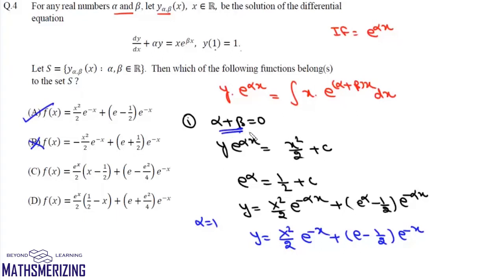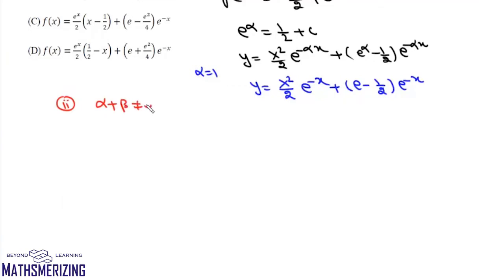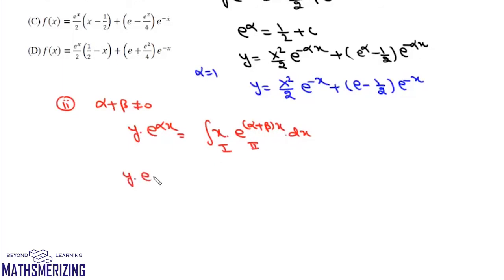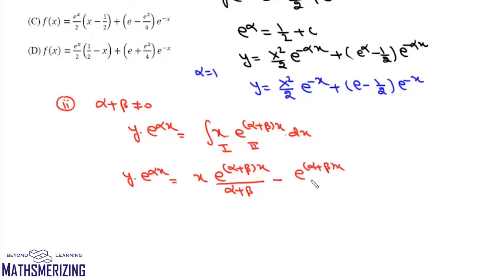Case 2: alpha + beta ≠ 0. We write y·e^(alpha·x) = integral of x·e^((alpha+beta)x) dx and solve by integration by parts, giving y·e^(alpha·x) = x·e^((alpha+beta)x)/(alpha+beta) - e^((alpha+beta)x)/(alpha+beta)² + c. Applying the initial condition x = 1, y = 1, we get e^(alpha) = e^(alpha+beta)/(alpha+beta) - e^(alpha+beta)/(alpha+beta)² + c.